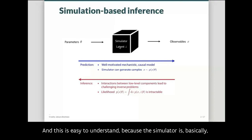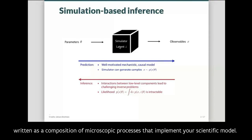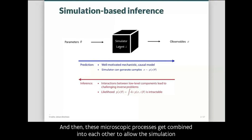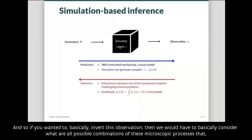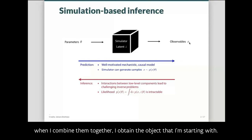This is what we call inference in machine learning or probabilistic modeling — going from X to theta — and it's usually difficult because we don't have direct access to a function that tells us how likely a particular X is given some parametrization. The reason is that the simulator does not directly provide this function, since it is written as a composition of microscopic processes implementing the scientific model.